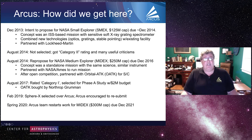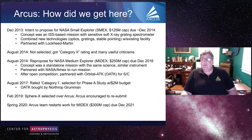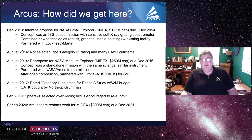In ARCUS's case, Jay Bookbinder and I started in December of 2013 and put in an idea for a small explorer that was going to go on the International Space Station — still a soft x-ray grating spectrometer, using new technologies to stabilize it. That proposal wasn't selected, but it got a NASA Category 2 rating.